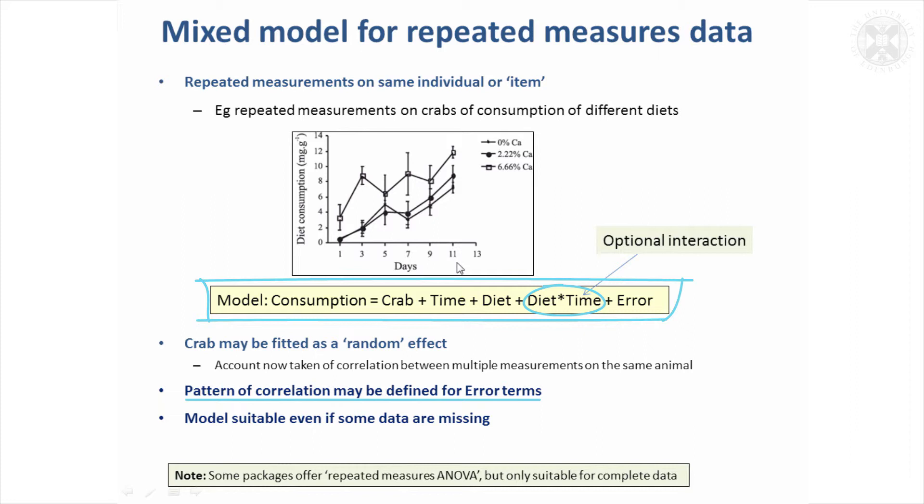Observations closer together might be more highly correlated than other observations. In fact, you could set it up to say observations that are more than three time points apart are not correlated at all.